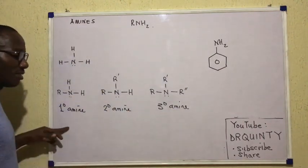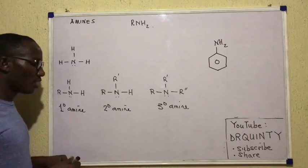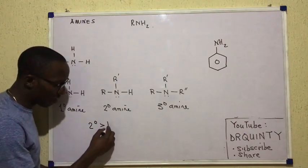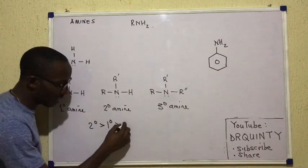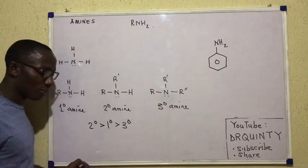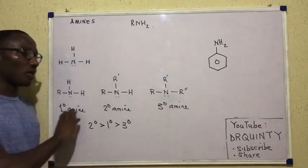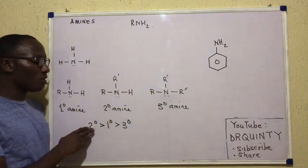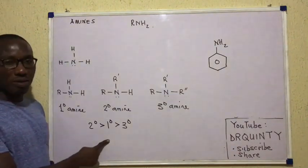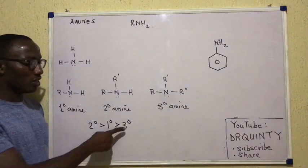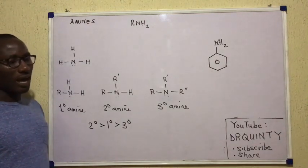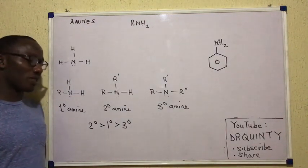Then among the amines themselves, the general sequence of their relative strengths is: secondary is greater than primary is greater than tertiary. Which means of the three classes of amines, the secondary amines are the strongest bases, followed by the primary amines, and then finally the tertiary amines. So that's how their strength varies.